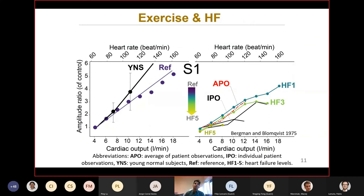This figure shows an experiment done by Bergman on normal subjects and subjects with coronary artery disease. All the black lines here are the data from the experiment. On the left, you see that young normal subjects have a linear relation with the amplitude ratio of control and cardiac output. And our simulation shows similar behavior. Also, on the right, you see that with increasing the level of severity of heart failure, we have a reduction in S1 amplitude. And we see that we have similar behavior in the experimental data.